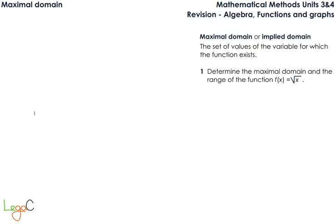Let's look at the first example. We have to determine the maximal domain and the range of the function f(x) equals square root of x. Well, you already know that we cannot have square root of a negative value in the real numbers set. For this reason, the quantity under the square root has to be greater than or equal to 0.